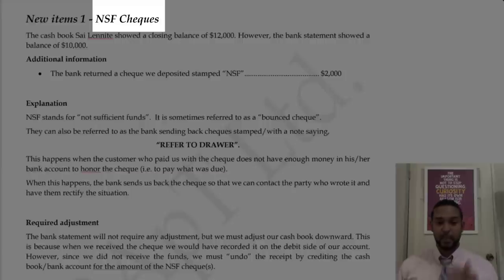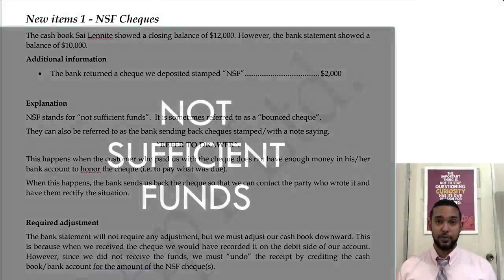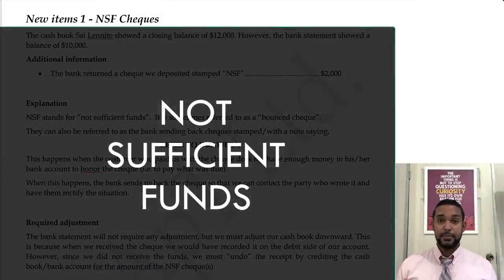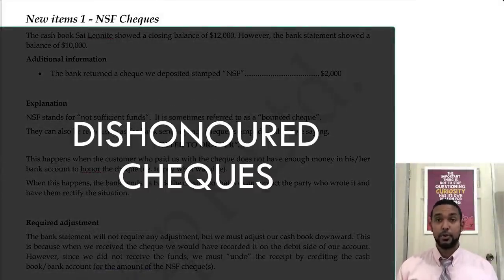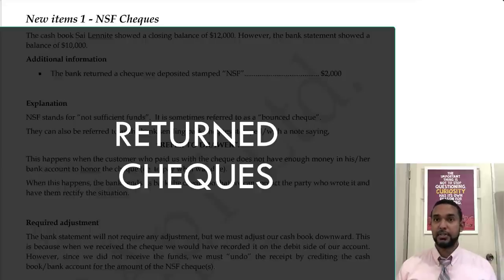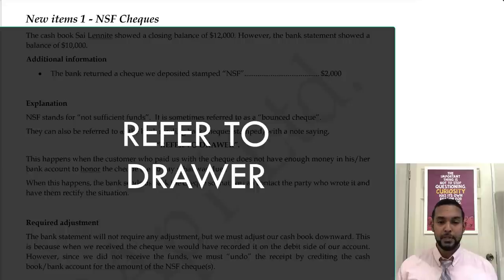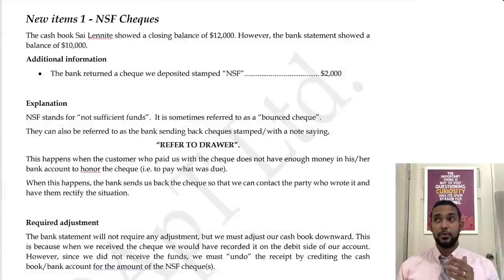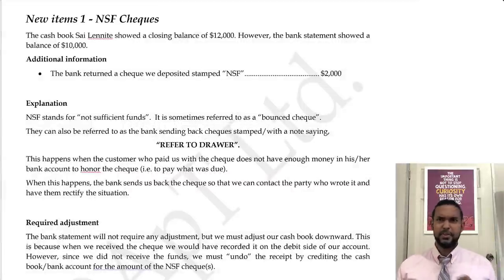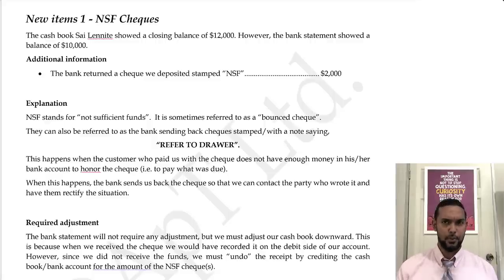The first thing I want to talk about is something called an NSF check. NSF stands for not sufficient funds. Other names are dishonored checks, return checks, or the question can say the bank returned the check marked refer to drawer. So why do we get into business? To make a profit. The simple formula for profit is revenues minus expenses. We earn revenue by providing goods or services.